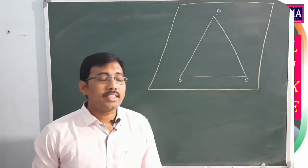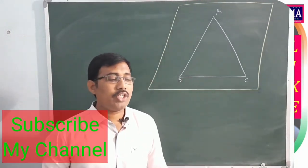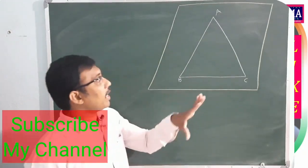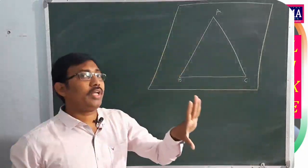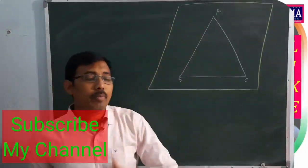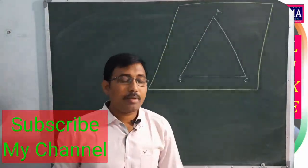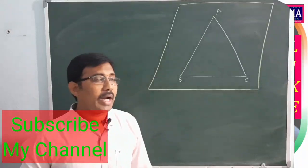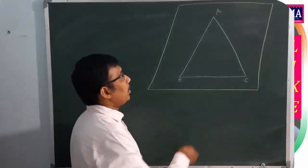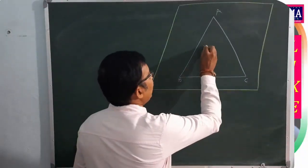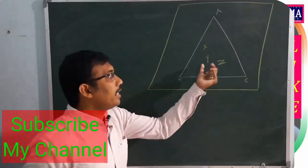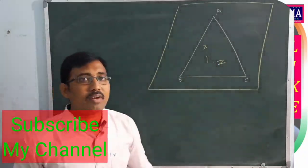Any triangle — any closed figure — divides the plane into three sets of points. The first set is the interior points of the triangle, for example points X, Y, Z. The second set consists of points A, B, C and points P, Q, R which lie on the sides of the triangle.